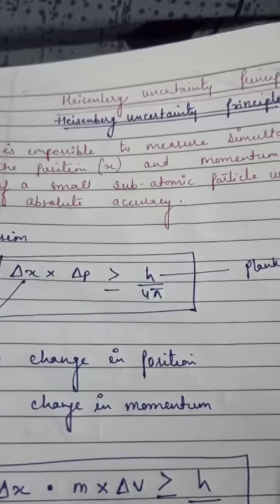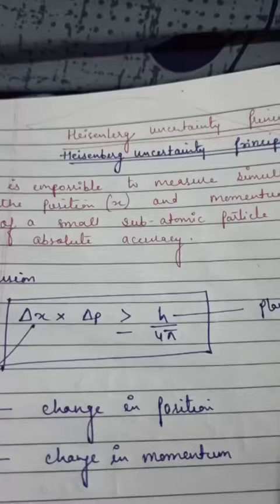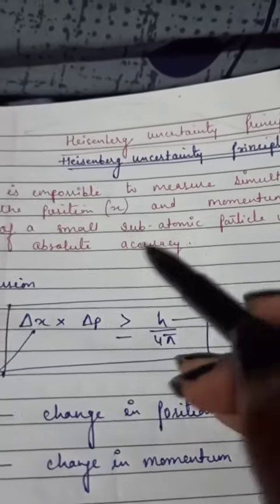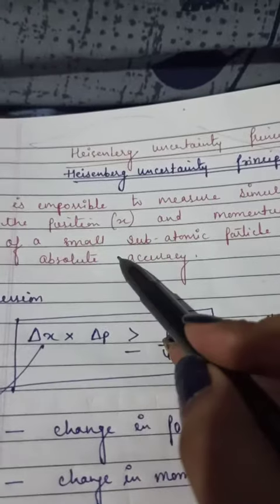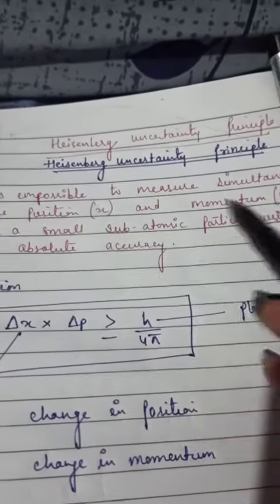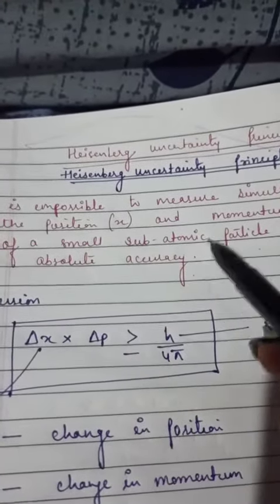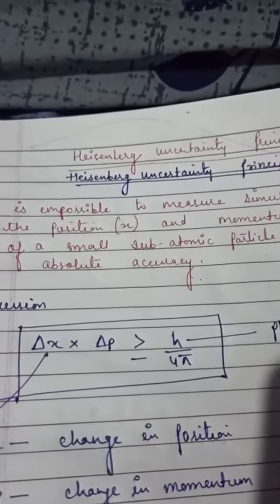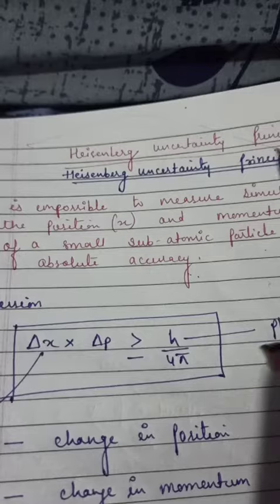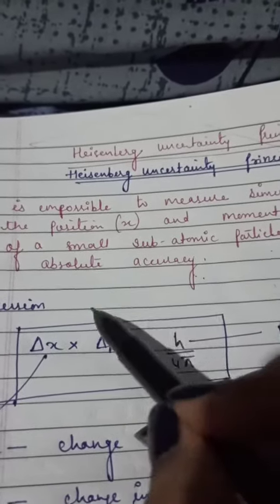Heisenberg Uncertainty Principle states that it is impossible to measure simultaneously the position and the momentum of a small subatomic particle with absolute accuracy.